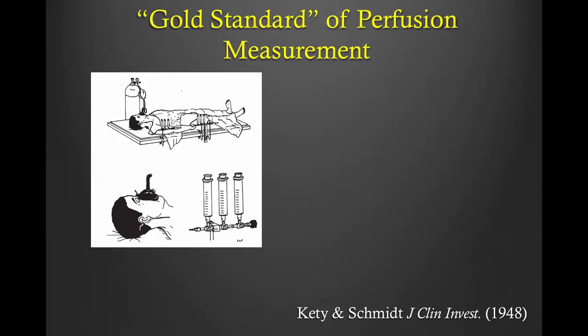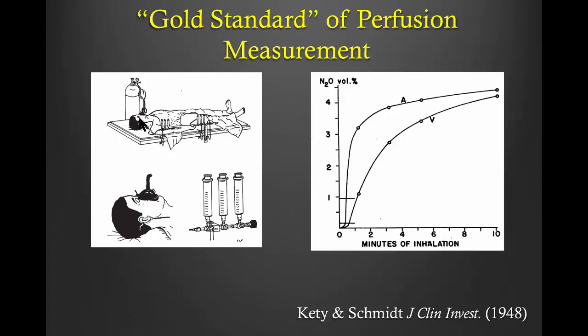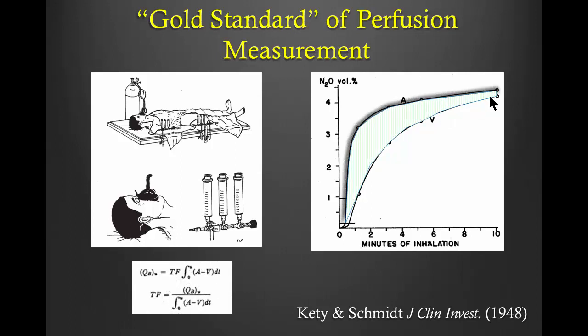All tracer kinetic models can be traced back to the gold standard Kety-Schmidt model, developed by two pharmacologists from the University of Pennsylvania after World War II. In their experiment, they asked subjects to inhale a tracer—nitrous oxide—while collecting blood from both the radial artery and the jugular vein. They plotted the time-dependent tracer curves in the venous and arterial measurements, and the difference between the area under the curve of the arterial and venous measurements indicates the total tracer deposited into the brain, described by two equations.